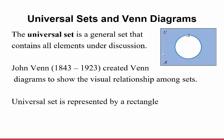The universal set is represented by a rectangle, and this rectangle represents all the elements under discussion. So if I wanted to talk about the natural numbers between 1 and 10 — 1, 2, 3, 4, 5, 6, 7, 8, 9, and 10 — we would use this rectangle to house all those numbers. They fit somewhere inside the circles we call sets, and that in entirety would be a Venn diagram. That'll make more sense when we get to an example.